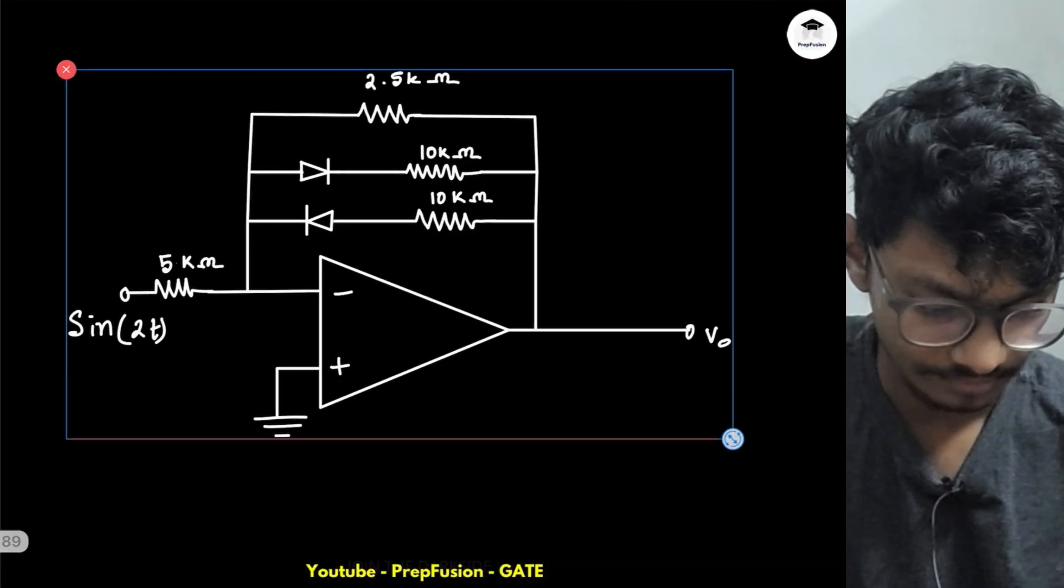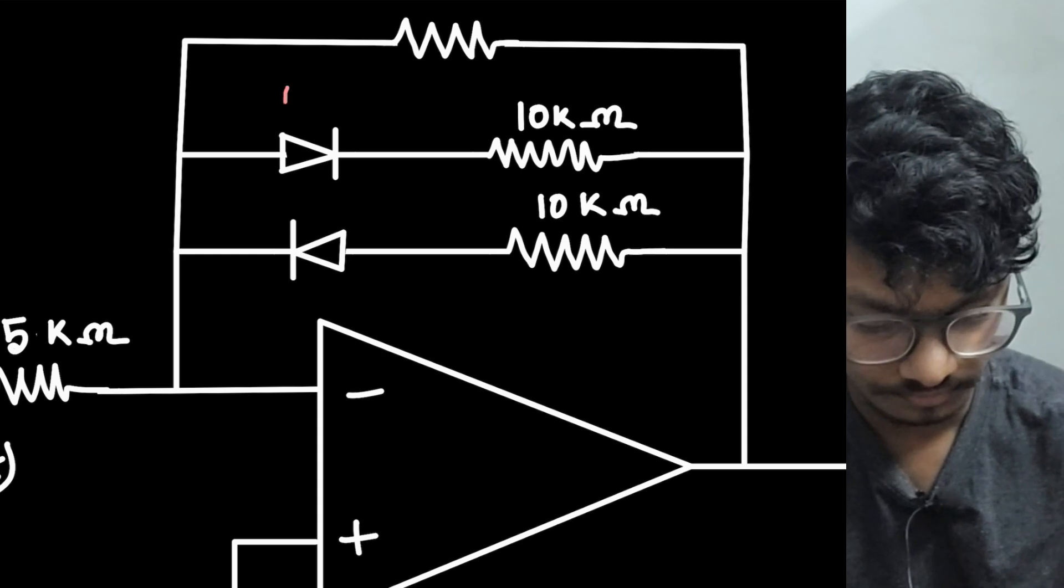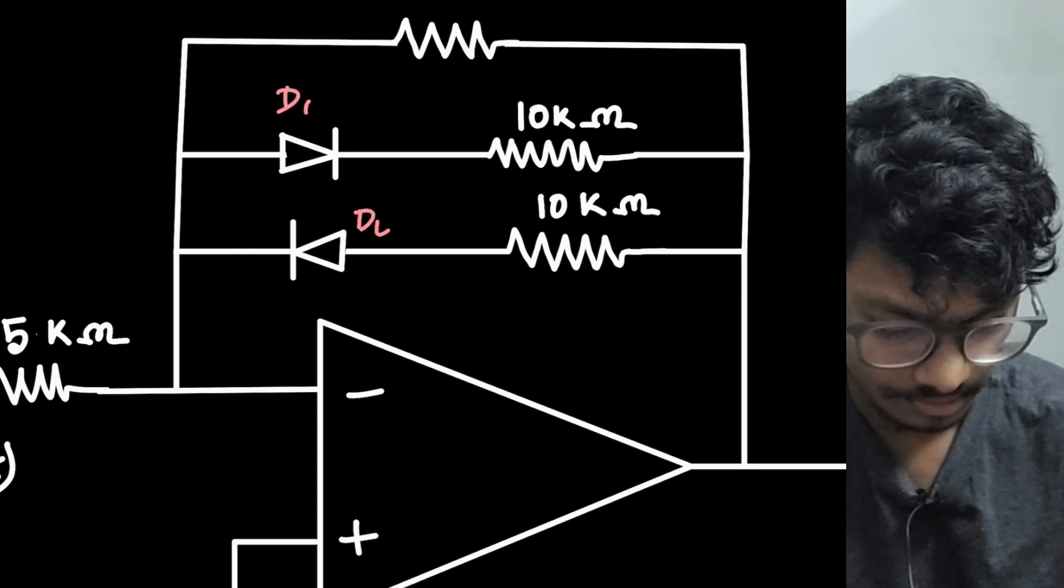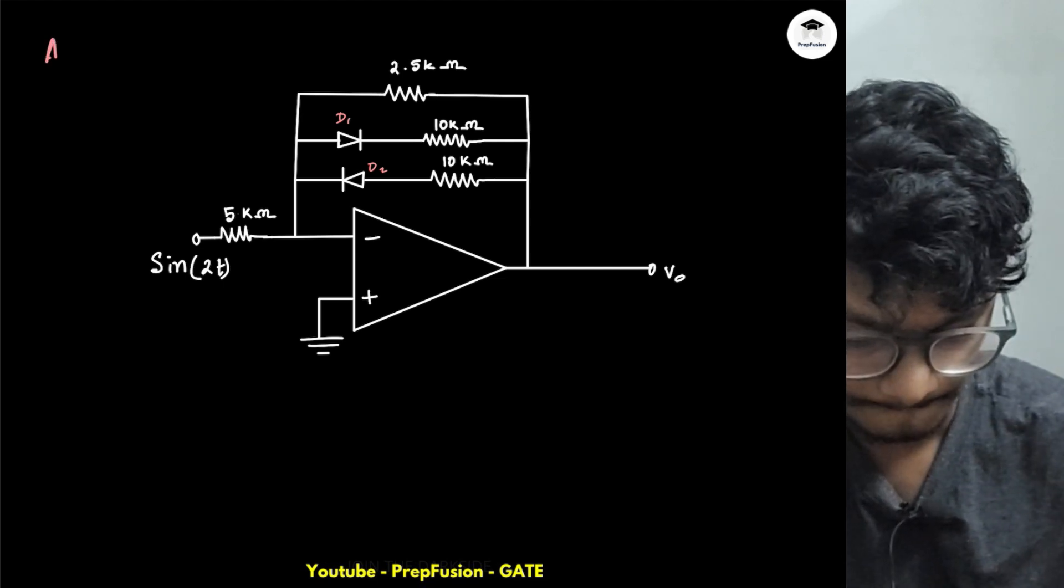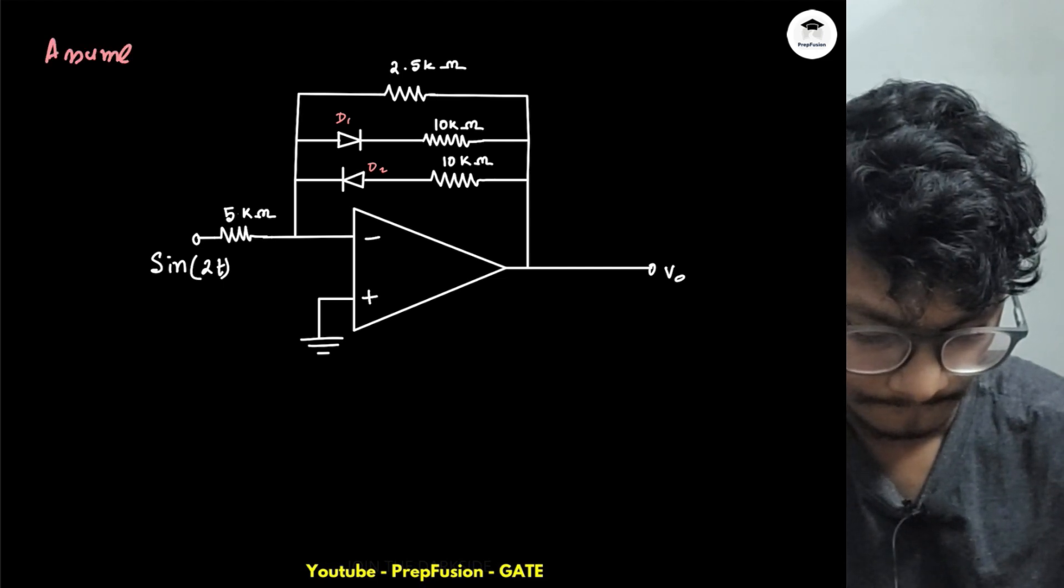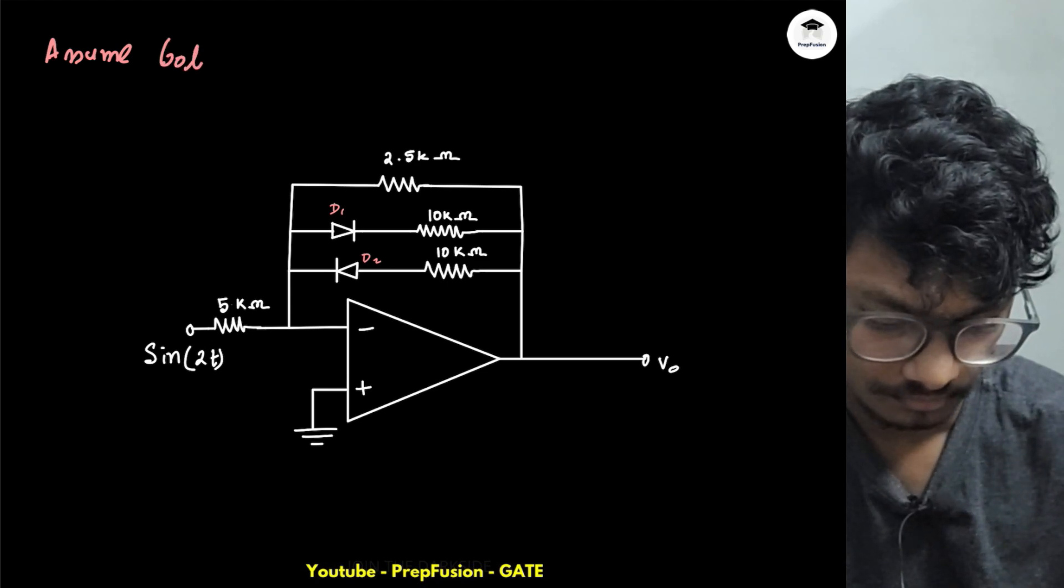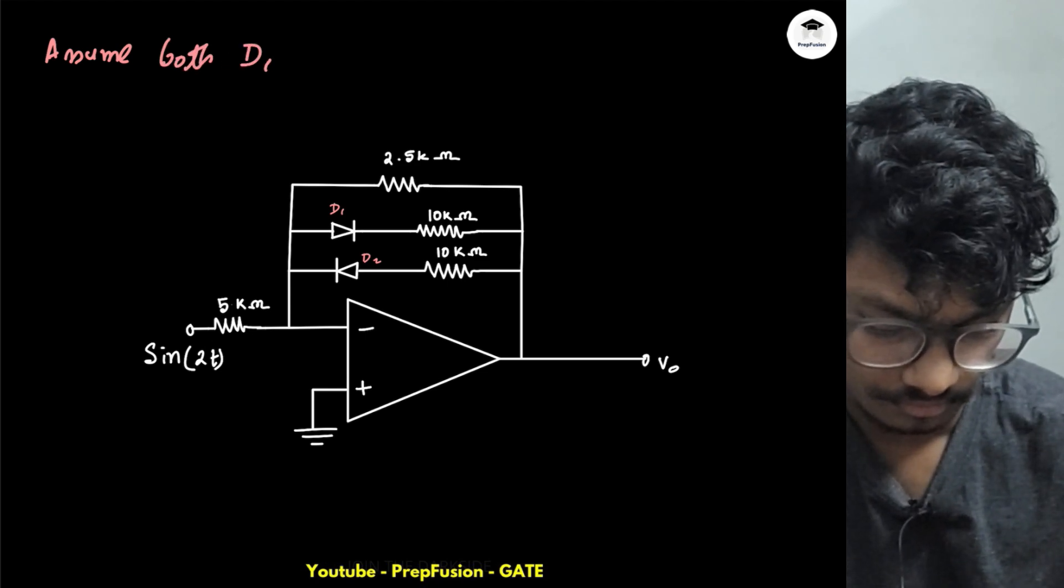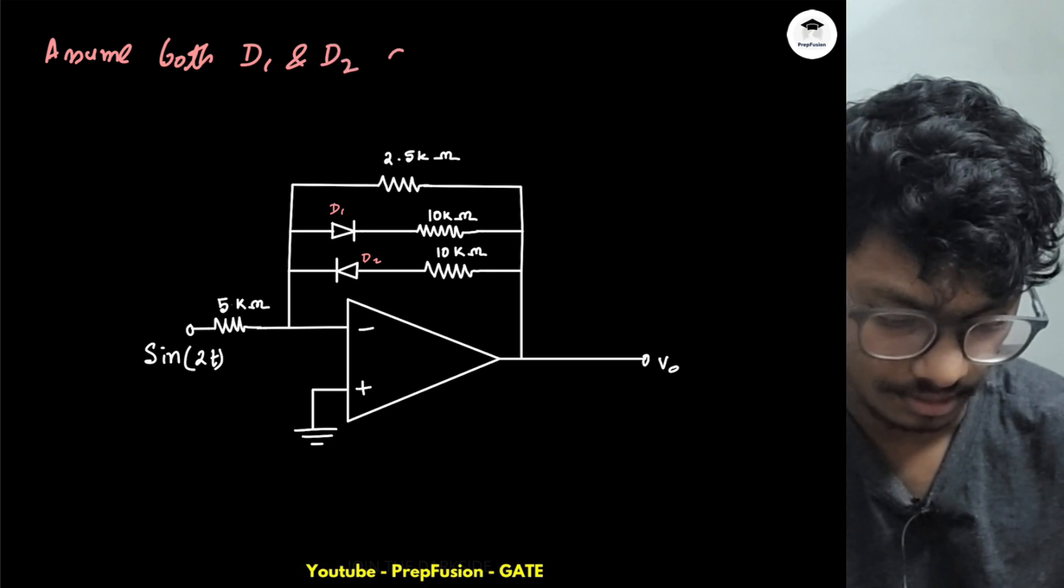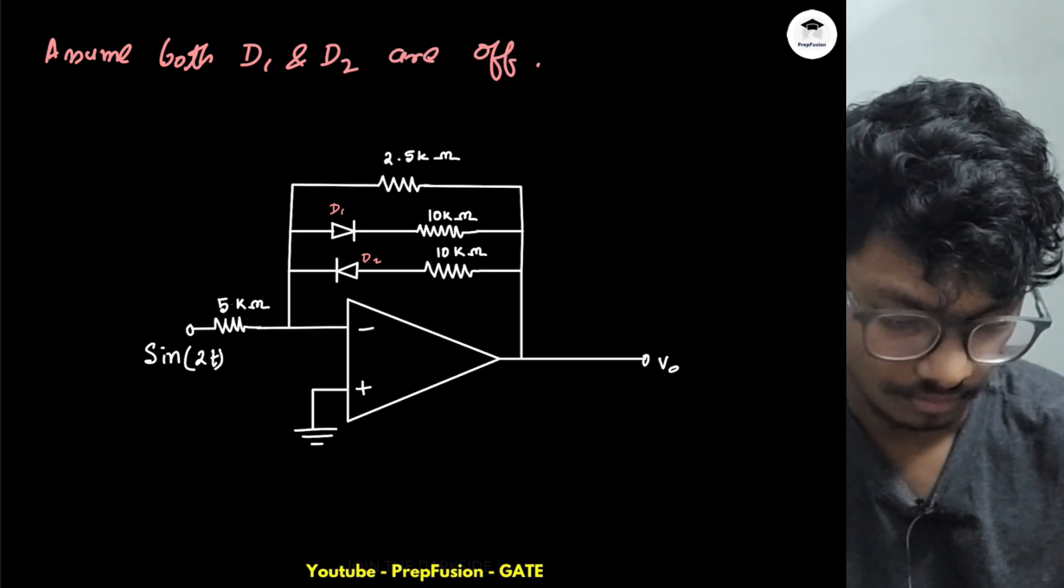I'll paste it over here and name these diodes as D1 and D2. I will assume that both D1 and D2 are off.